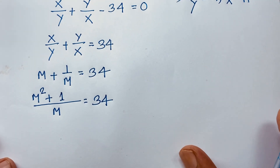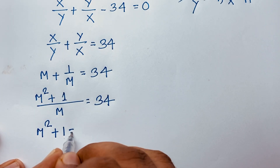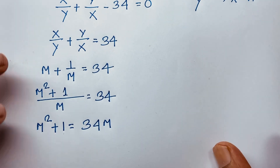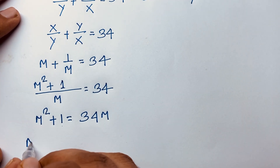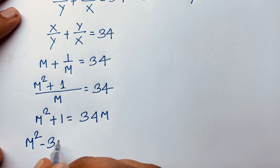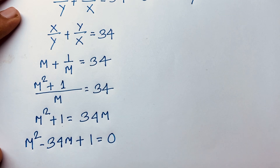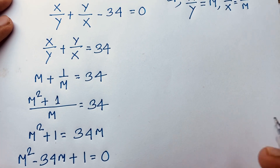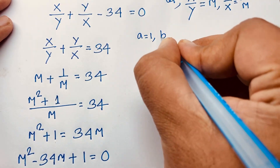Rearranging this expression gives the quadratic equation m² minus 34m plus 1 = 0. Here a = 1, b = minus 34, and c = 1.